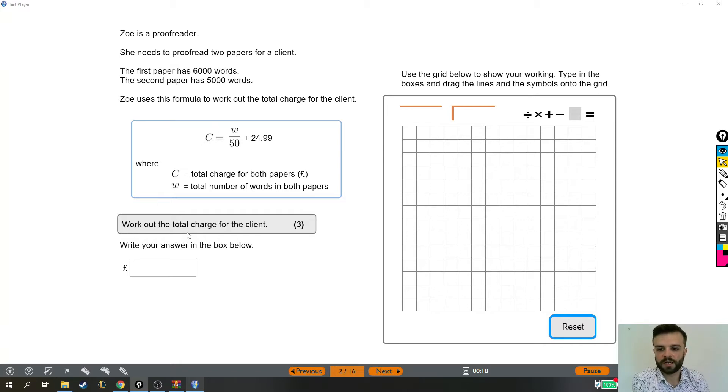We'll talk about this in a minute. Work out the total charge for the client. The total charge for both papers equals w, the total number of words in both papers, divided by 50 plus 24.99. So do remember that this fraction means divided by. This is telling us to take the number of words on both papers and divide it by 50.